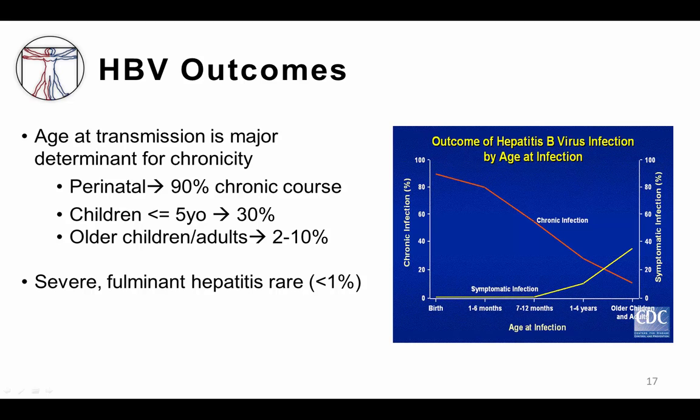Unfortunately, not everyone who is infected with hepatitis B resolves their infection. Resolution depends on a number of factors, but age of infection is a major influence. In parts of the world where hepatitis screening and vaccination are less available, many infants acquire hepatitis B at birth when exposed to blood and bodily fluids of infected mothers. Their immune systems are immature and unable to effectively clear the virus, so up to 90% of these exposed babies will go on to develop chronic hepatitis B infection. As we age and our immune systems become better able to deal with the virus, exposure is less likely to cause chronic disease, and only around 10% or less of adults who are exposed will become chronic carriers.